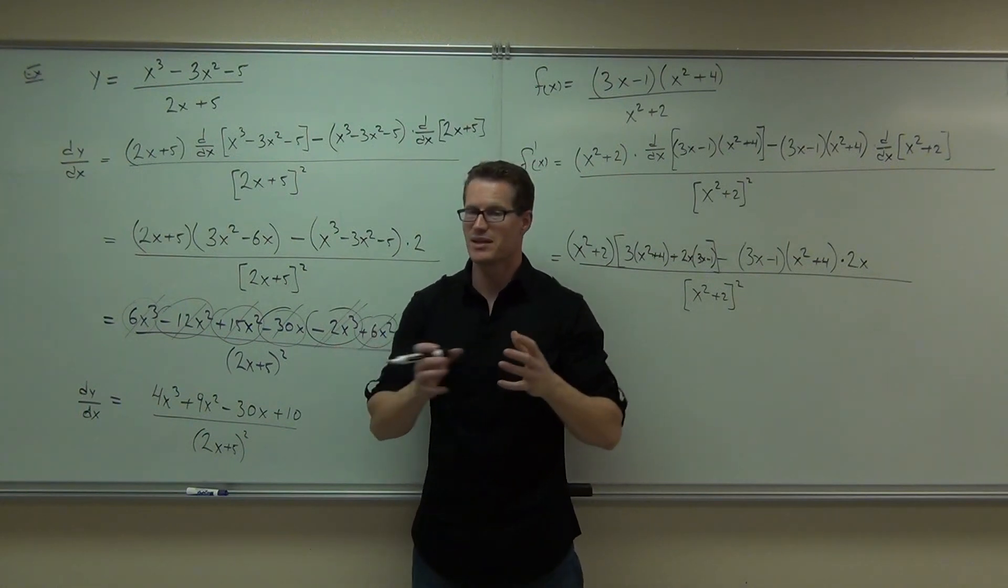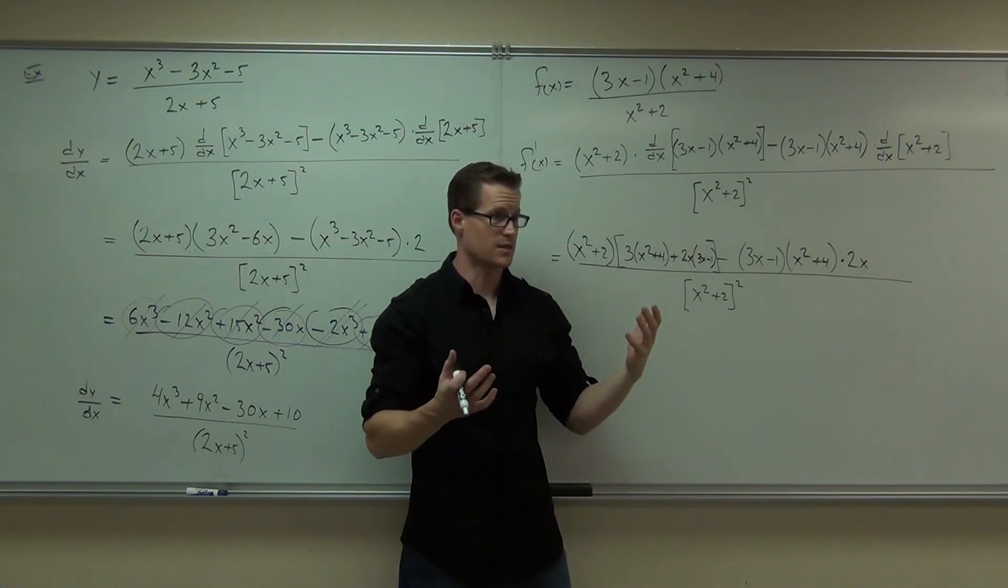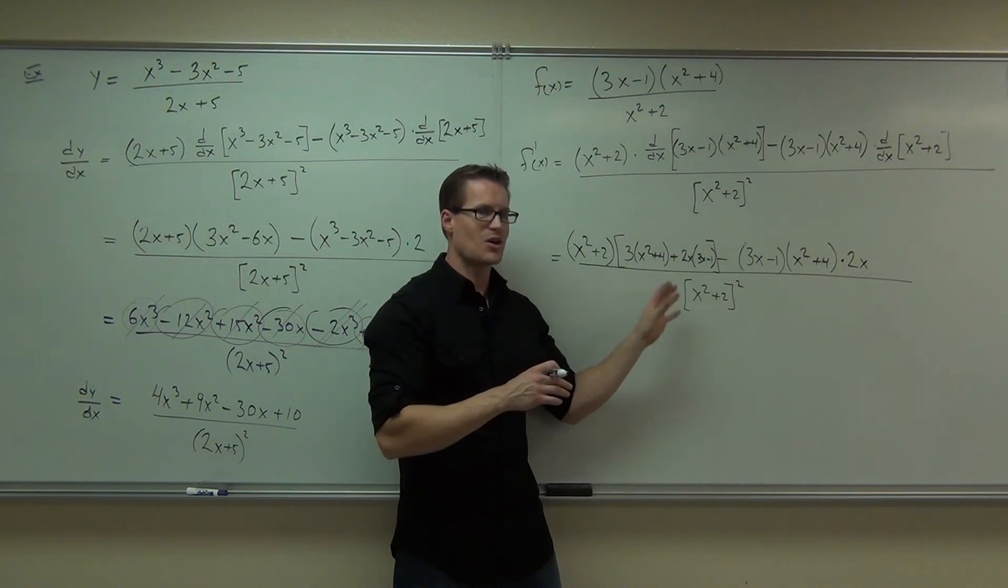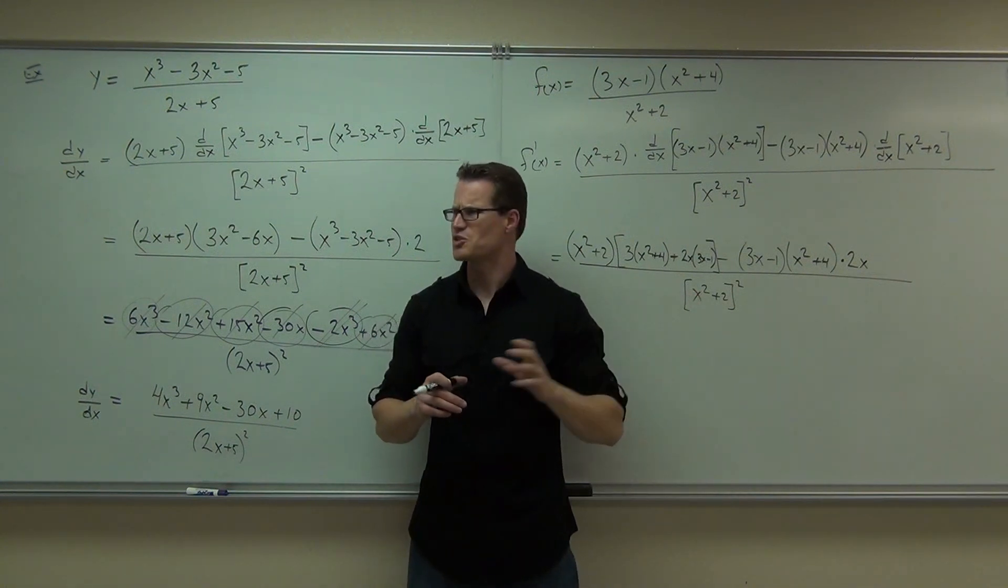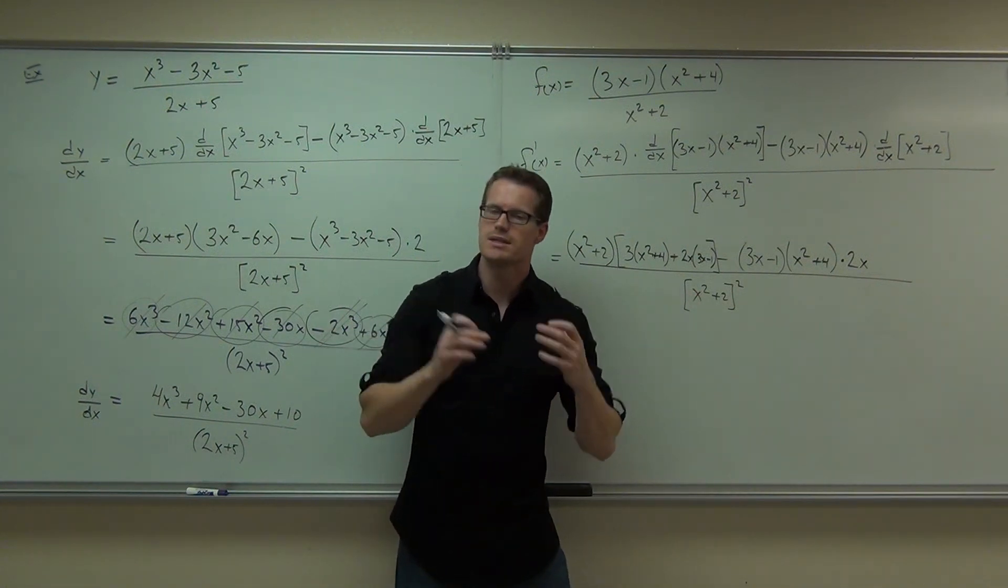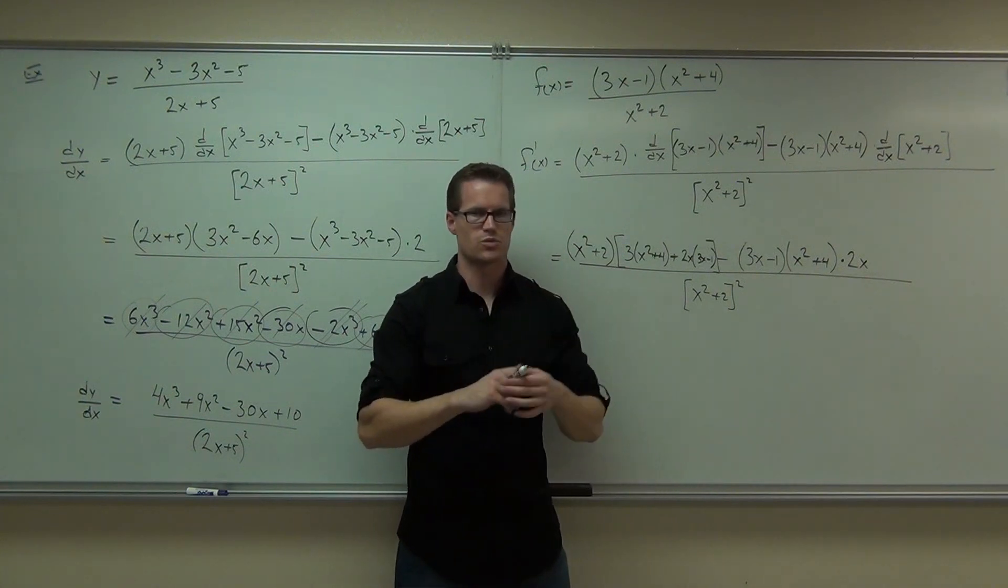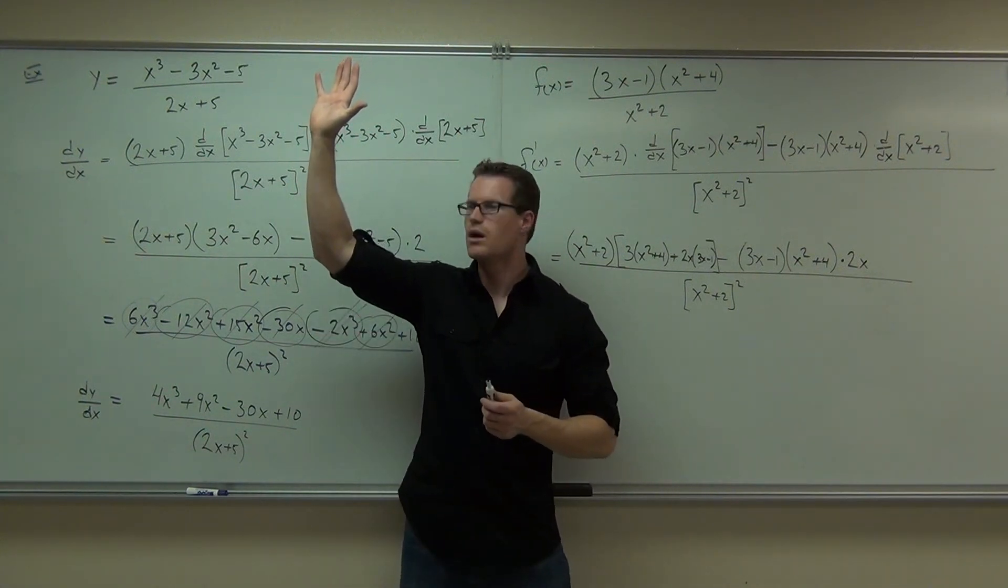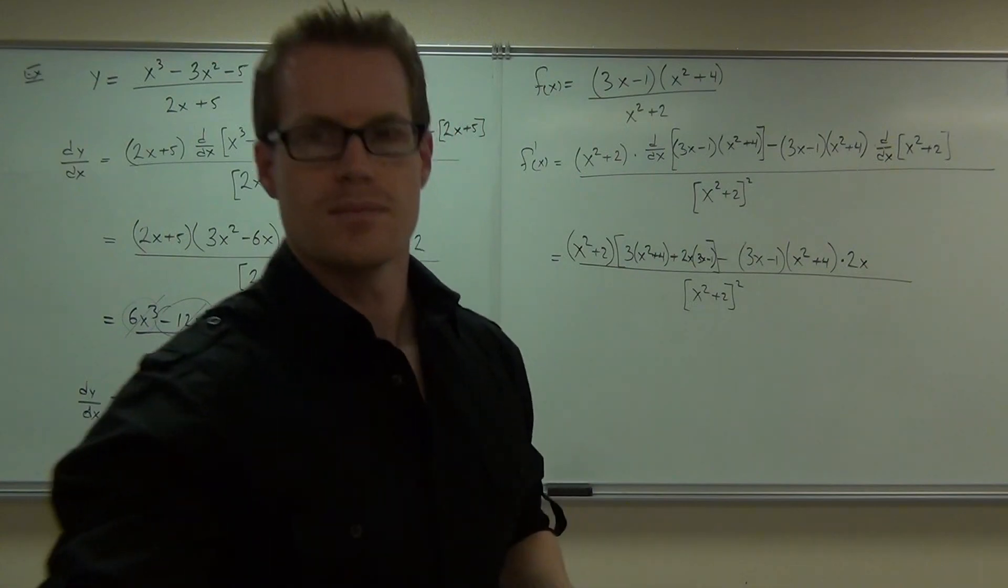If you want to spend the time and distribute and distribute, don't forget the negative and then combine all those terms. You'd get something pretty nasty looking, but it would be a polynomial in this case. I'm not going to go that far. It's going to take me 10 minutes just to distribute everything. Do you understand the idea of the product rule working with the quotient rule? Do you feel okay with that? All right, very good.